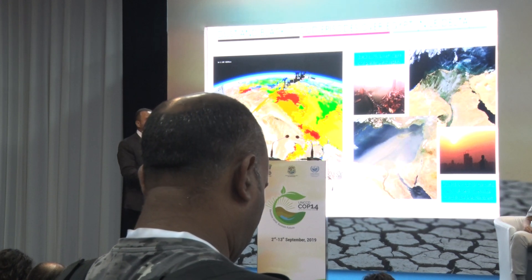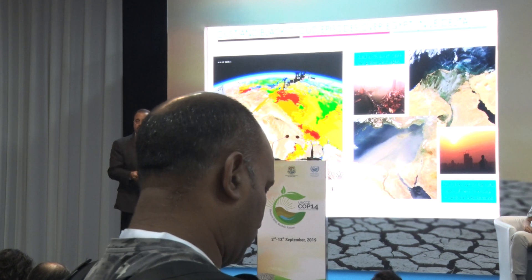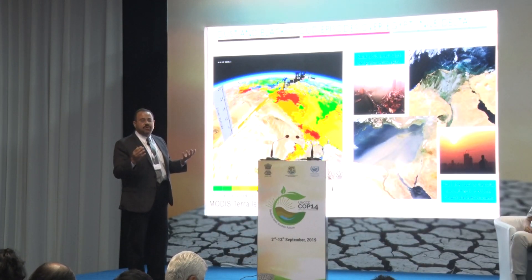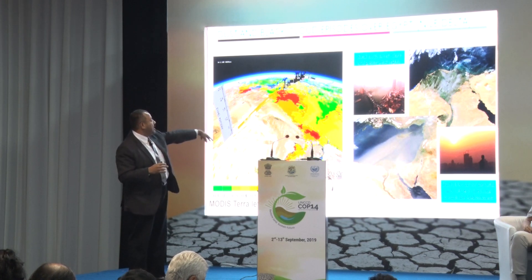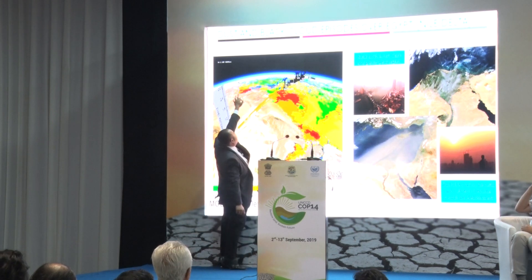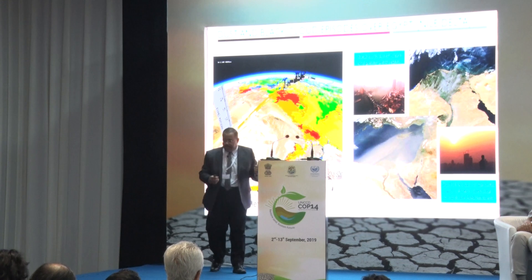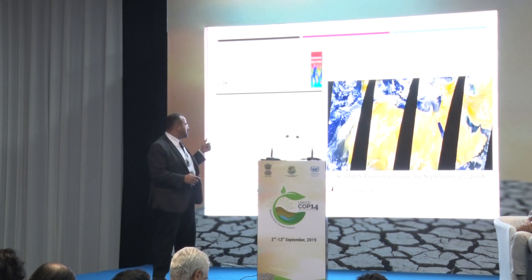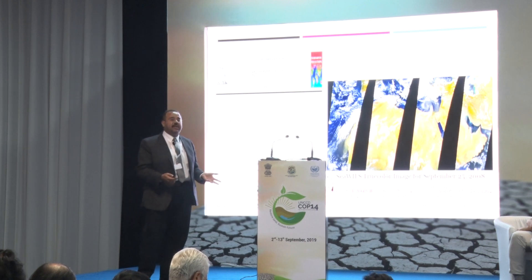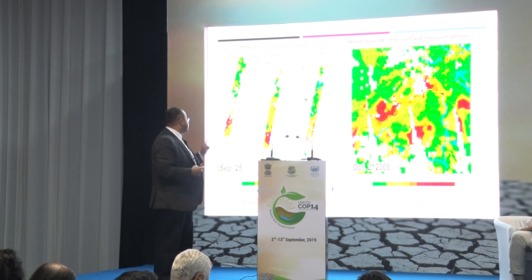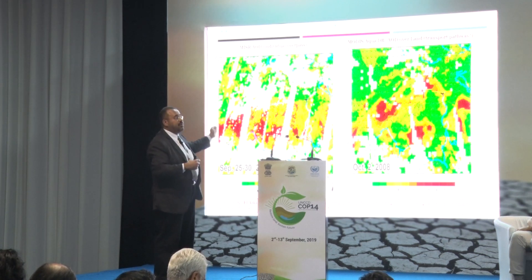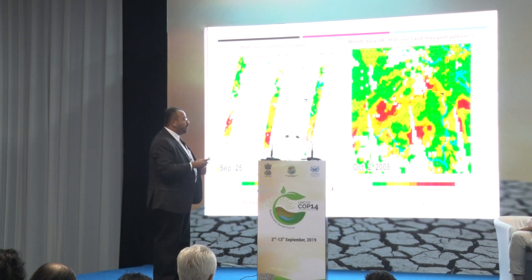Some of our work looked into what colleagues from Egypt know as the black cloud episode — a mixing scenario between anthropogenic pollution from rice burns or rice ash byproduct, combined with the spring season's massive dust storms. This chart shows the long-range transport of dust coming all the way from Algeria across the Mediterranean and depositing over Cairo. This paper appeared in the Environmental Pollution Journal and showed the long-range transport which exacerbated the formation of the black cloud episodes.